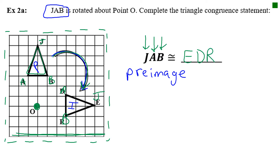Remember, they already named the first triangle for us. When naming the second one, you can't just choose any combination of letters — you need to make sure the letters match up with congruent angles.